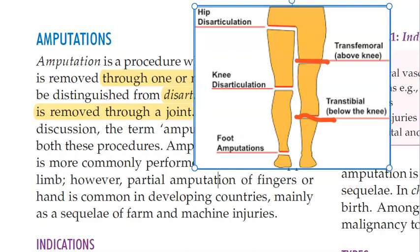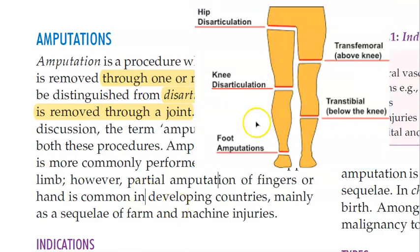If you are removing the tibia and fibula from the joint — from the femur — that is called disarticulation. Disarticulation means you are working on the joint and removing it; you are not cutting the bone exactly. That is the key difference between disarticulation and amputation.